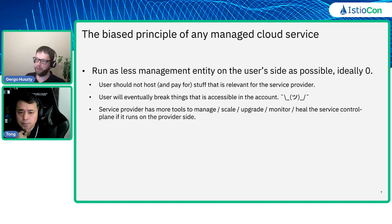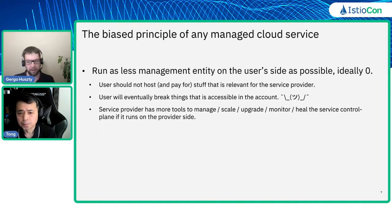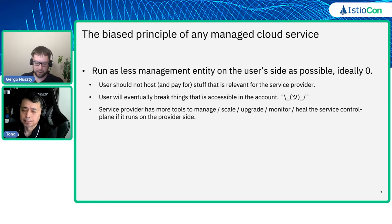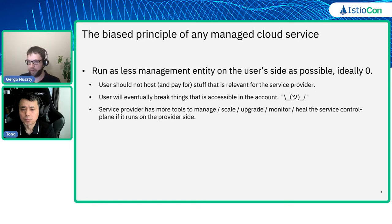A key principle for any managed cloud service is to run as few management entities on the user's side as possible — ideally zero. You should not host anything which is not strictly required to run the user's workload on the user's hosts, because the user may pay for that — egress traffic, CPU time, or whatever. The user obviously doesn't want to pay for stuff which is relevant for the provider and not for the customer. On the other side, what the user can see, they may want to tweak or tune things, and they may even break your workload if you are the provider. So it is a good principle to keep the control plane entities away from the user-managed parts of the system.